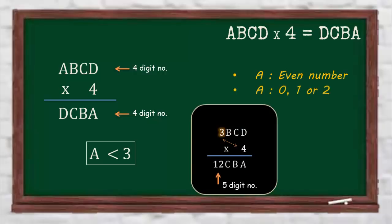So the value of A can be 0, 1, or 2. We know that A is an even number, so A has to be either 0 or 2.